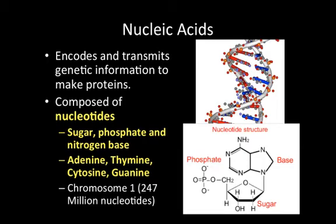Nucleic acids are the genetic code for the cell — they encode and transmit genetic information to make proteins. They're composed of monomers called nucleotides, each made of a sugar, a phosphate, and a nitrogen base. The sugar determines the type: in DNA (deoxyribonucleic acid), the sugar is deoxyribose; in RNA, the sugar is ribose. The sugar really determines what type of nucleic acid it is.